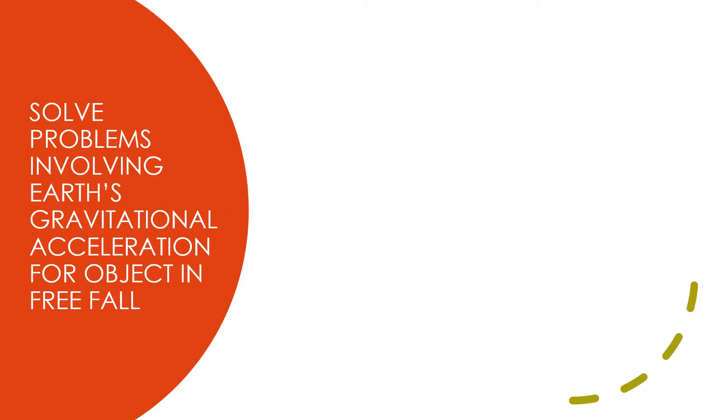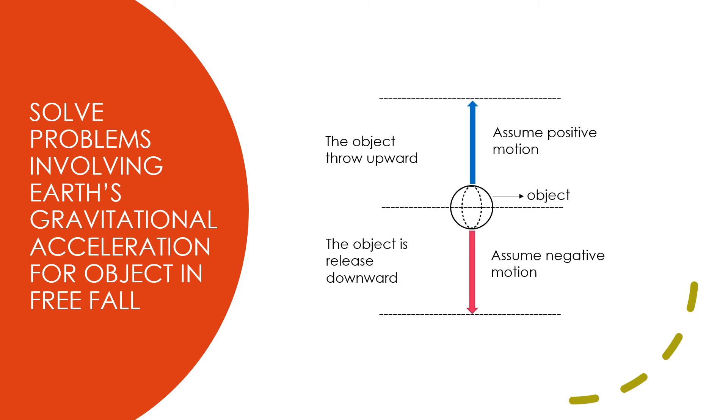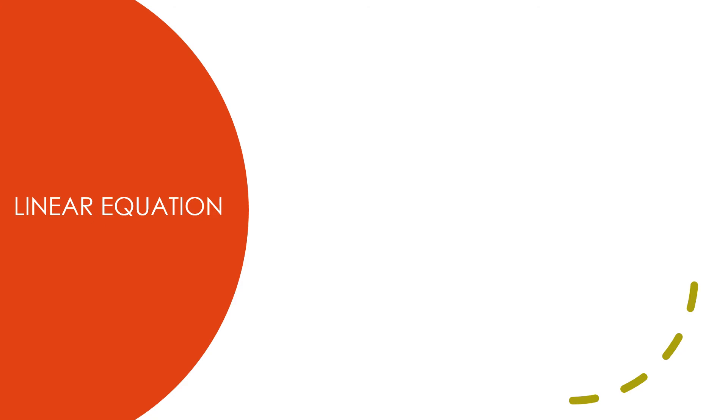So, you have a glimpse about the concept of free-fall motion. We can now solve problems involving the Earth's gravitational acceleration for objects in freefall. First, let's take a look at this free-body diagram. We have a ball as our object. When the ball is thrown upward, we assume it has a positive motion. When the ball is released downward, we assume it has negative motion. This is important when solving free-fall problems. How about gravitational acceleration? Well, because the gravitational acceleration is negative motion, the value for it must always be negative, which is negative 9.81 m per second squared.